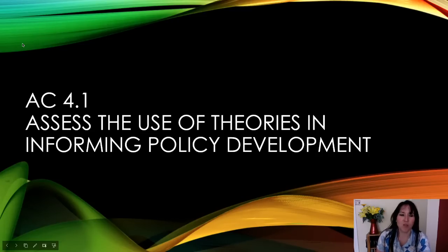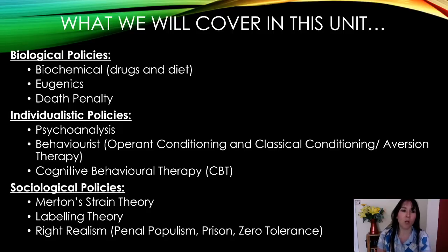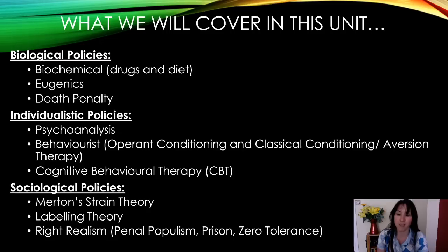Assessment criteria 4.1: assess the use of theory in informing policy development. What we will cover in this unit: we will look at biological, individualistic, and sociological policies. Within biological policies we'll look at biochemical — drugs and diet — eugenics, and the death penalty. Within individualistic policies we'll look at psychoanalysis, behaviourist approaches including operant conditioning, classical conditioning, aversion therapy, and cognitive behavioural therapy (CBT). Finally, we'll look at sociological policies: strain theory, labelling theory, and right realism including penal populism, prison, and zero tolerance.